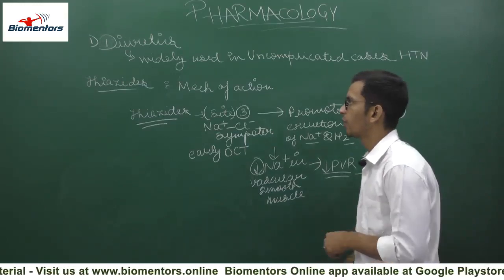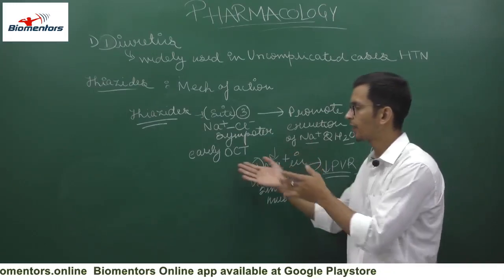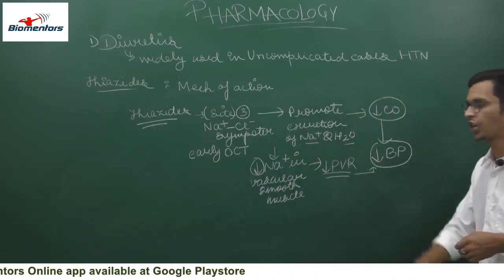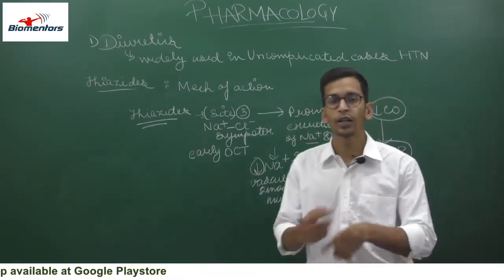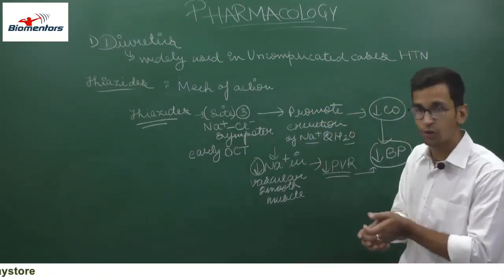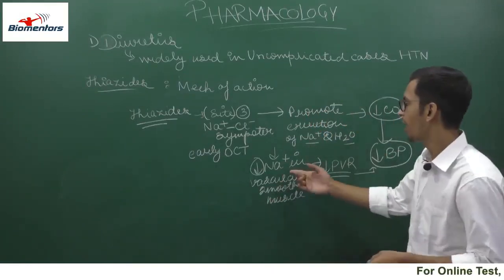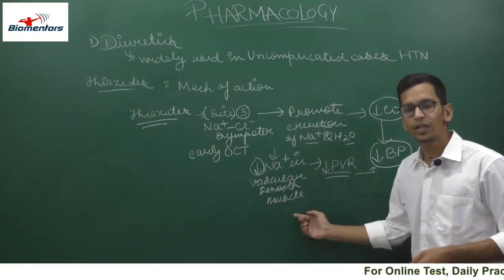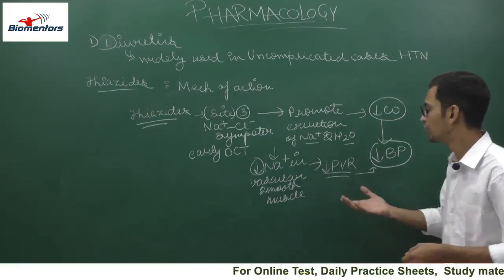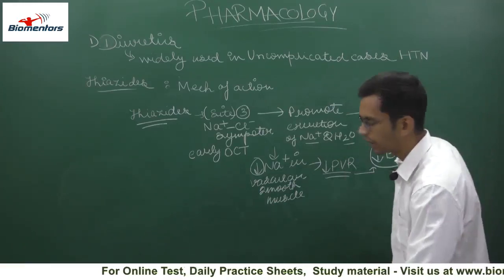So the whole mechanism of action of thiazides is: they act on site 3 (early DCT) at the sodium-chloride symporter, promoting excretion of sodium and water. This leads to decreased cardiac output and decreased blood pressure. Additionally, decreased sodium in vascular smooth muscle causes vasodilation, decreasing peripheral vascular resistance and finally managing blood pressure.